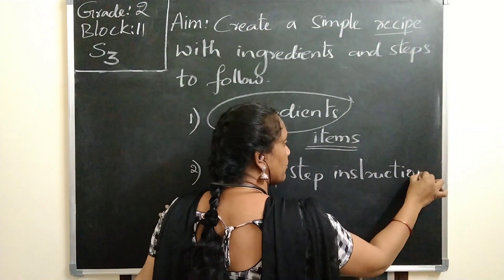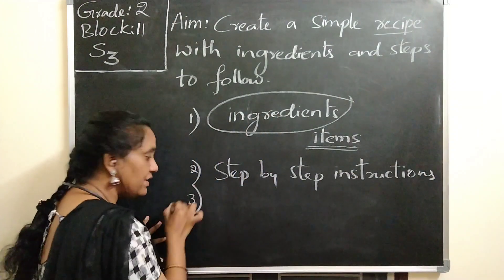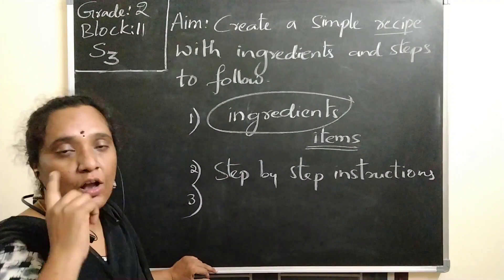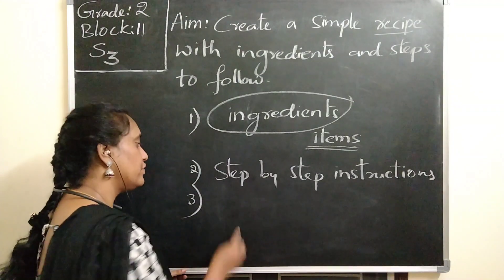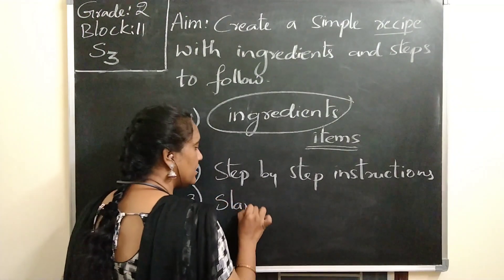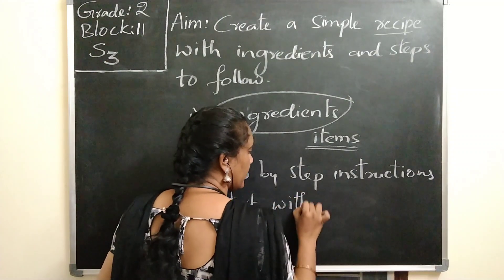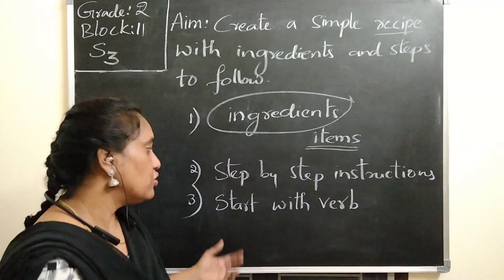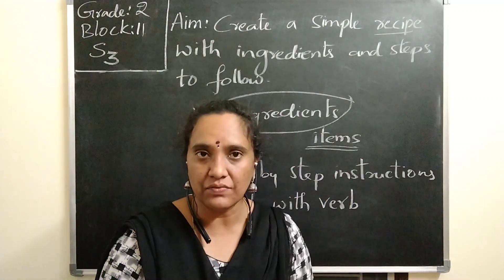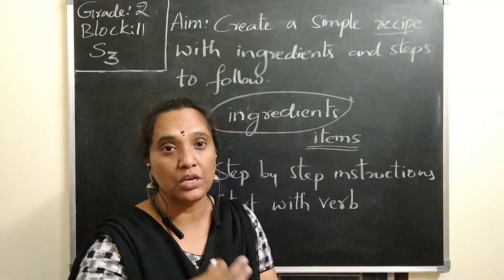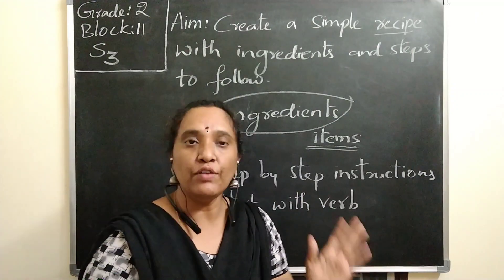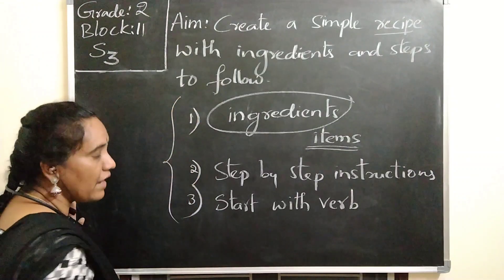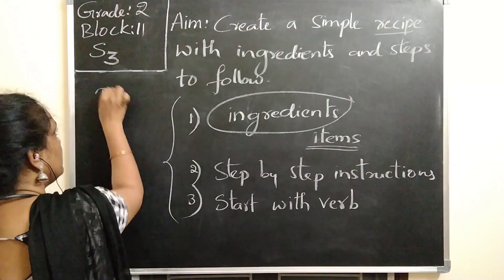To write the instructions, the main thing to remember is that all instructions must start with a verb — an action verb. If they start with an action verb, it will be easy to give the commands. Now if we want to write all the recipes in the form of a paragraph, we want to use order words.